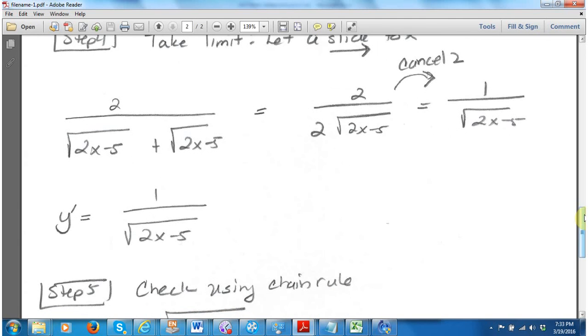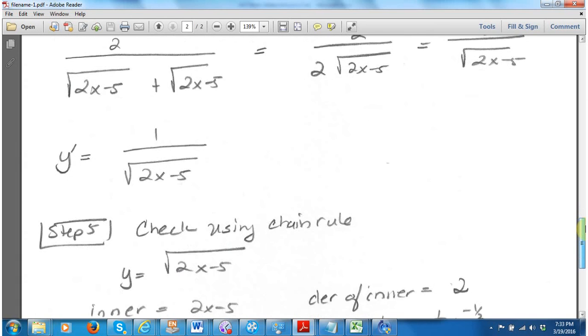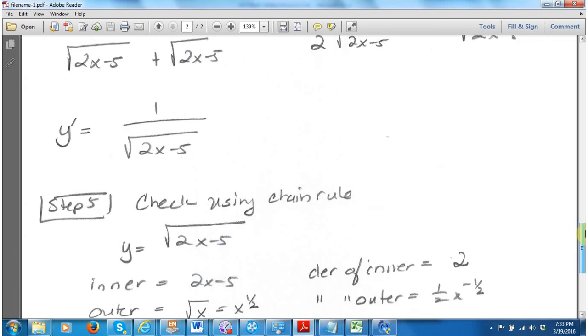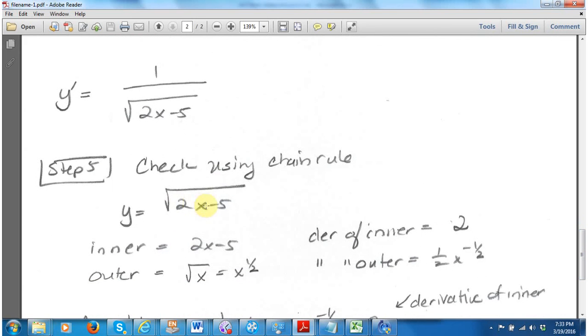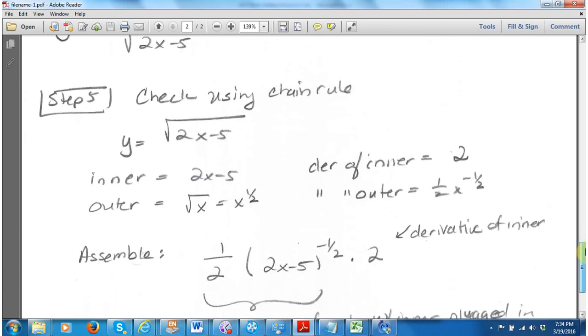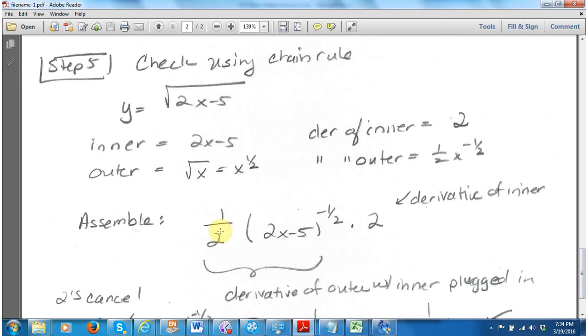Now on the midterm, I actually had you check this using the short way or just the chain rule. The original function was y equals the square root of 2x minus 5. The inner is 2x minus 5. The derivative of the inner is 2. The outer is found by covering up this inner with my thumb and replacing my thumb with an x. So it's square root of x, which is really x to the 1 half. The derivative of the outer is 1 half x to the minus 1 half.